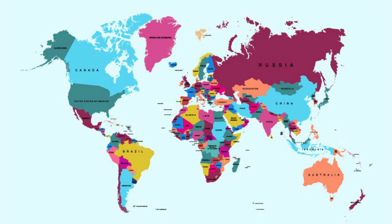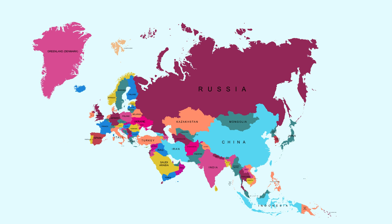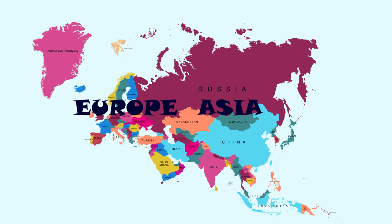This is how all continents and countries look nowadays. The largest continent of the planet is Eurasia, where more than half of the world's population lives. Eurasia is the combined continental landmass of Asia and Europe.